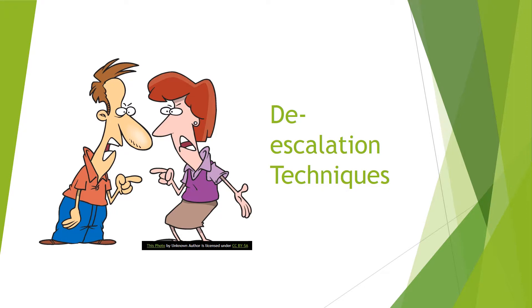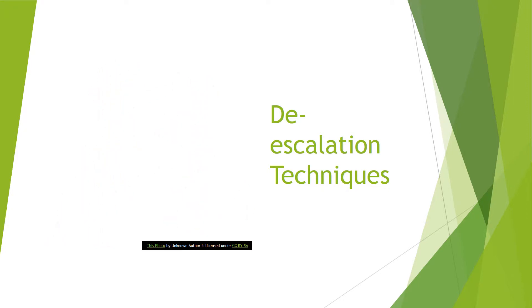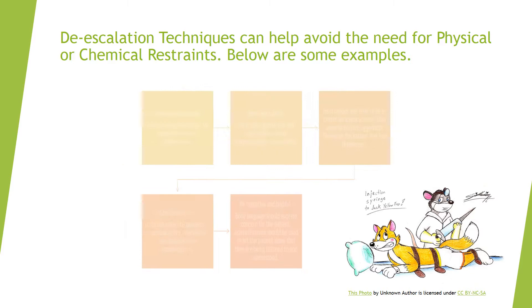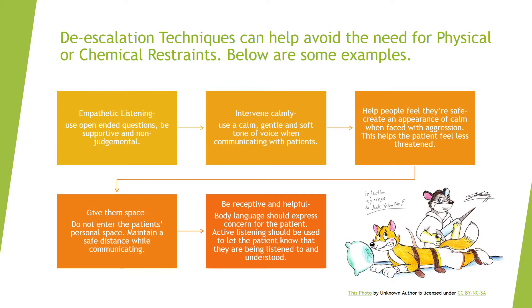De-escalation techniques can help avoid the need for physical or chemical restraints. Some examples include empathetic listening, such as the use of open-ended questions, being supportive and non-judgmental. You must intervene calmly, using a calm, gentle, and soft tone of voice when communicating with patients; this will help them feel safe. Create an appearance of being calm when faced with aggression — the patient will then feel less threatened. Give them space; do not enter their personal space and maintain a safe distance while communicating. Make sure that there is an exit for yourself if things escalate.